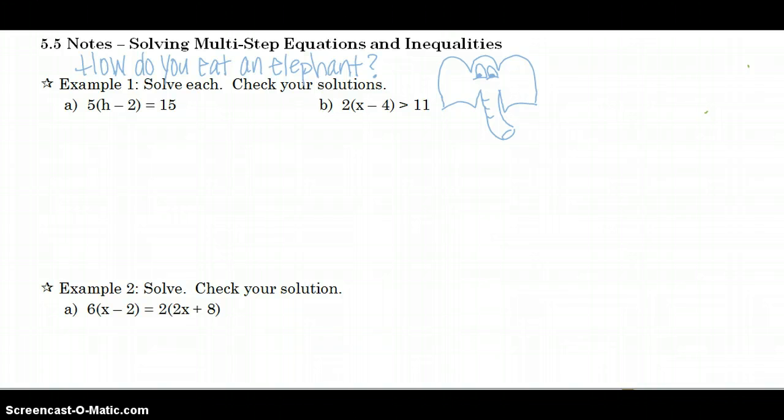One step or one bite at a time. So let's look at this first equation. See how there's an equal sign here. We need to first take care of our parentheses by distributing our 5. 5 times h minus. That minus came from the sign between the h and the 2. Now I'm going to say 5 times 2, which is 10, equals 15.